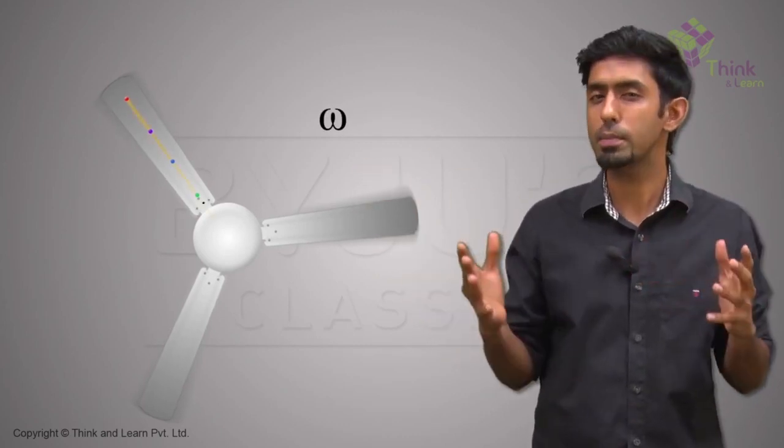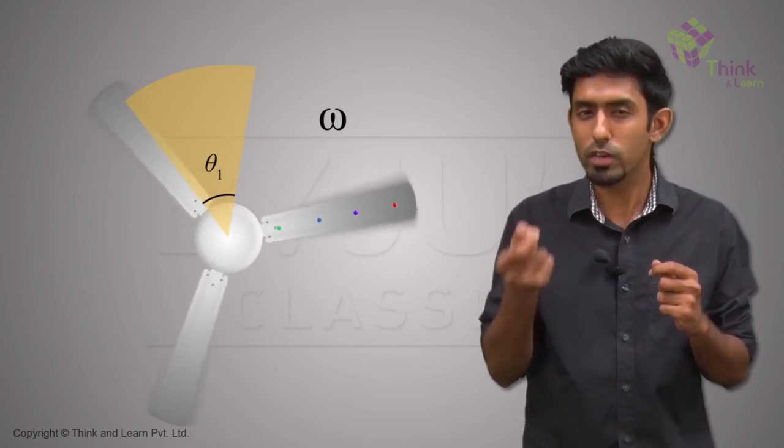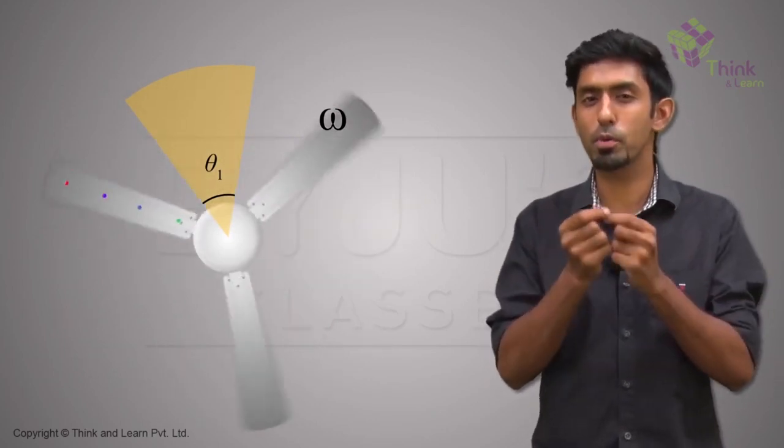And once you switch it on, what happens? They start covering a very small angle for a given time, which means their omega is very small to begin with.